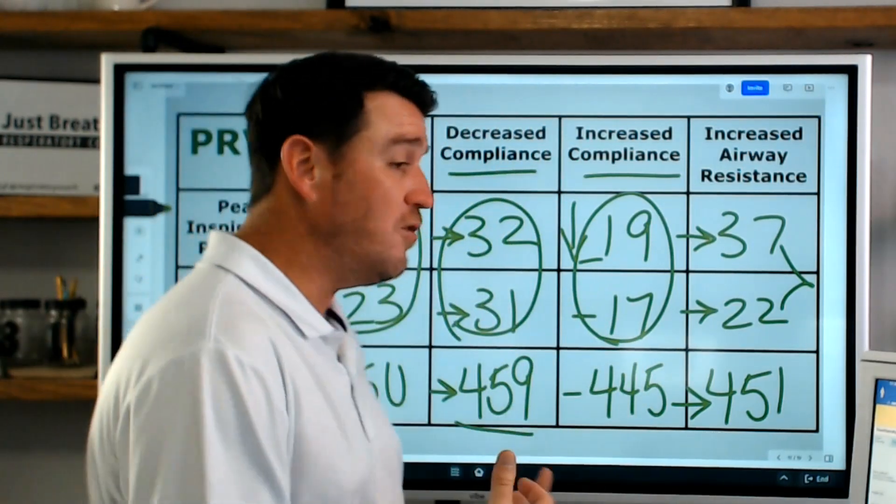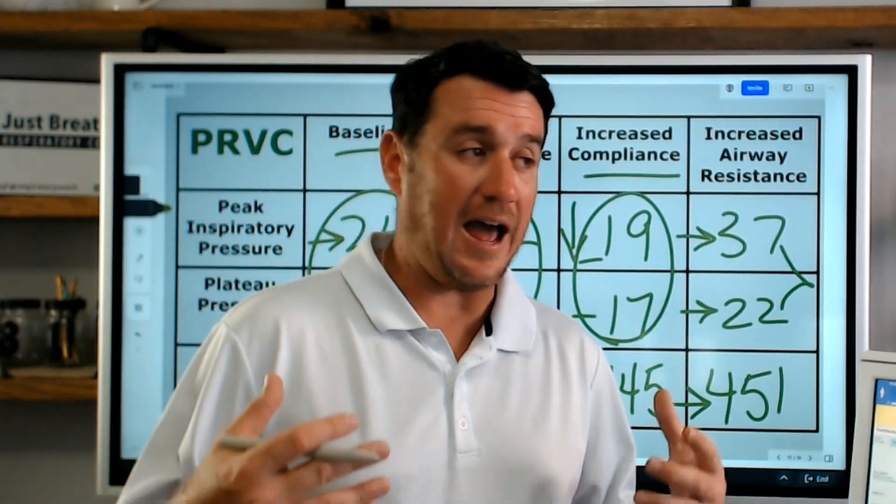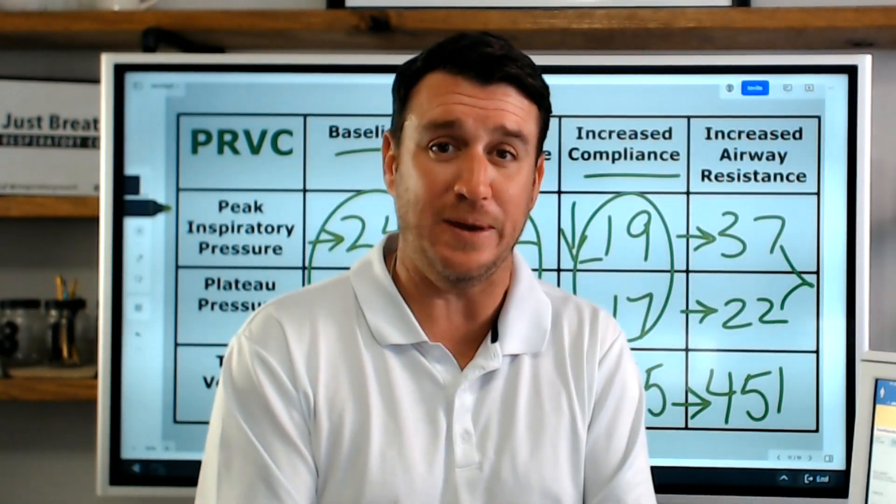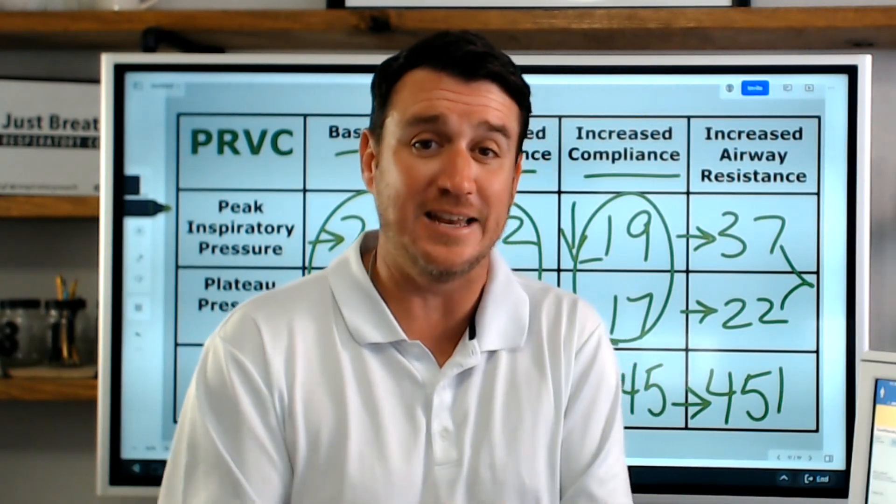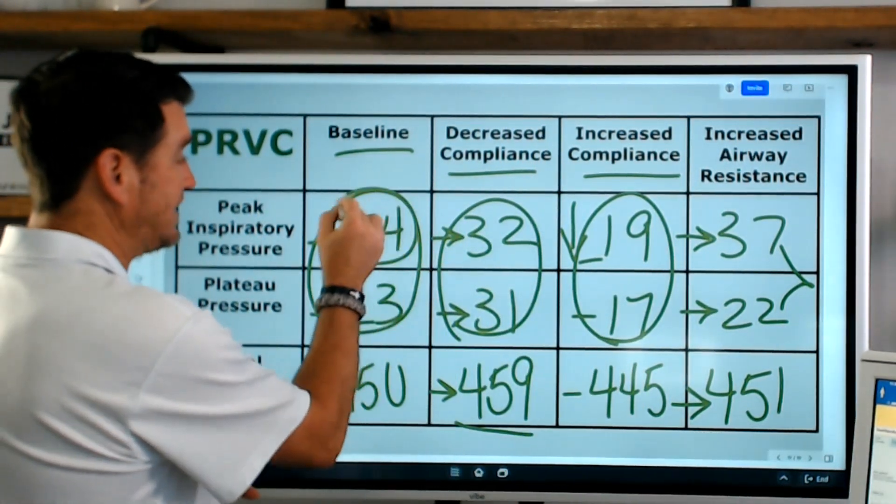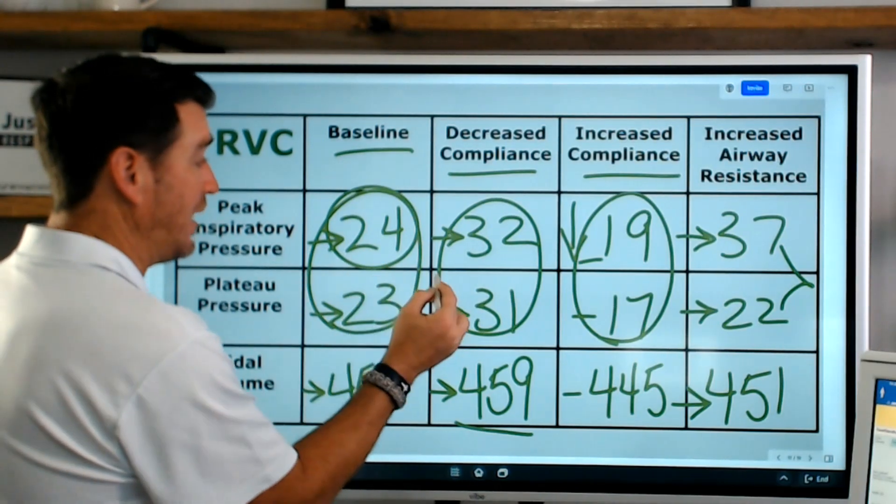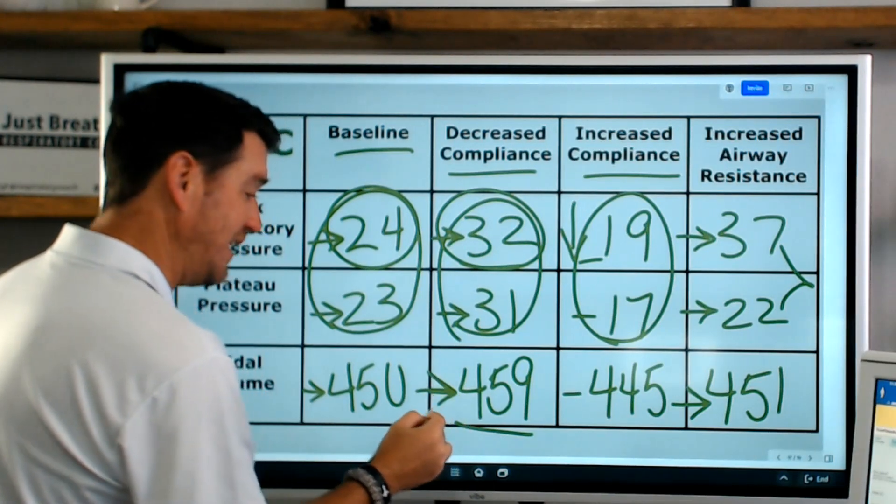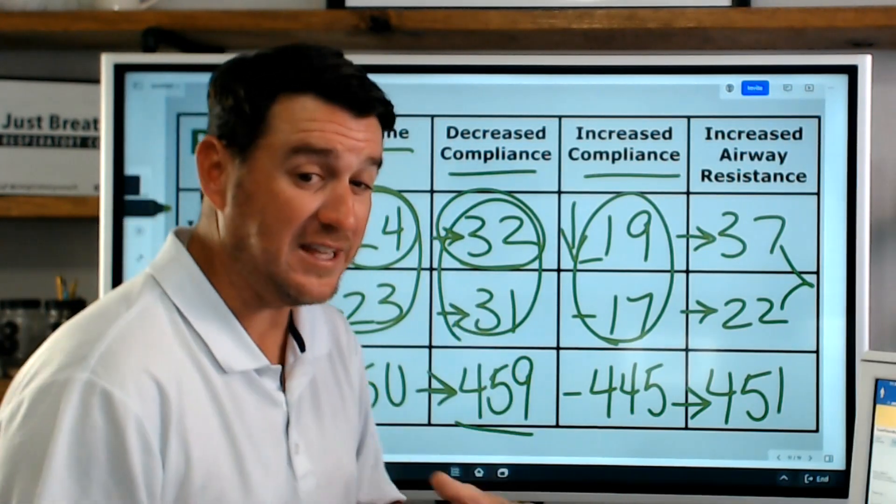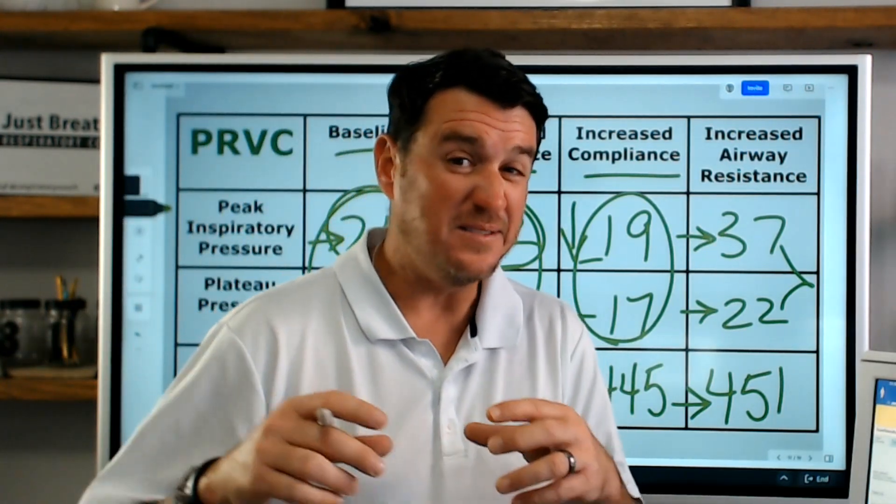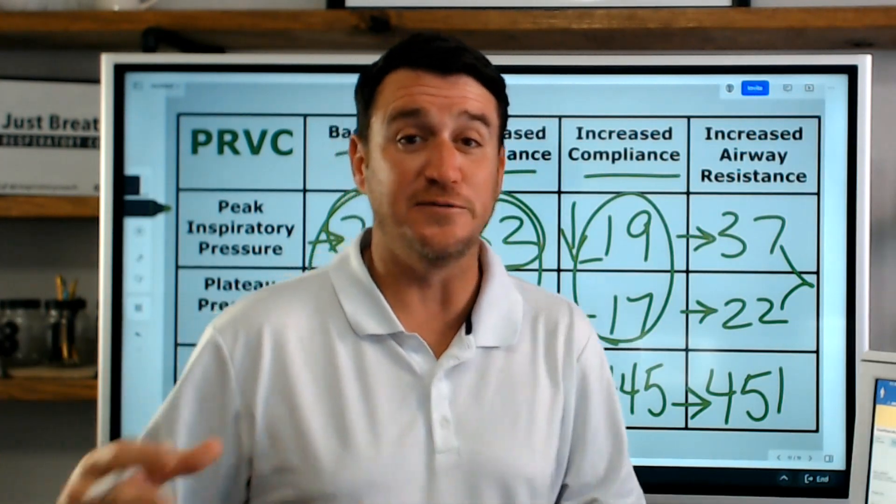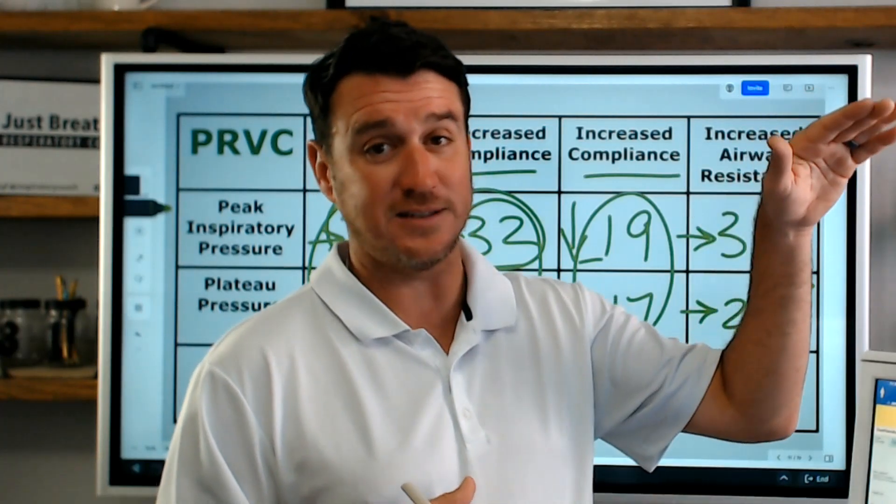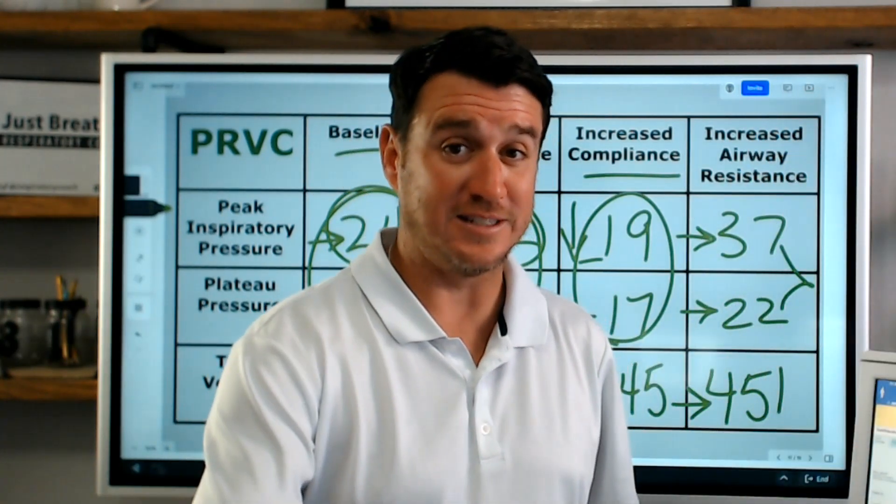So how do you know if there is a change? How do you recognize it? Wait a sec, something's not right with my patient. My patient's compliance is getting worse. Well, it's right here. Baseline was 24. When compliance went down, pressure increased. Tidal volume stayed the same. So you have to think of PRVC much more similar to volume control, where you see that volume stays consistent, but the pressure rises.